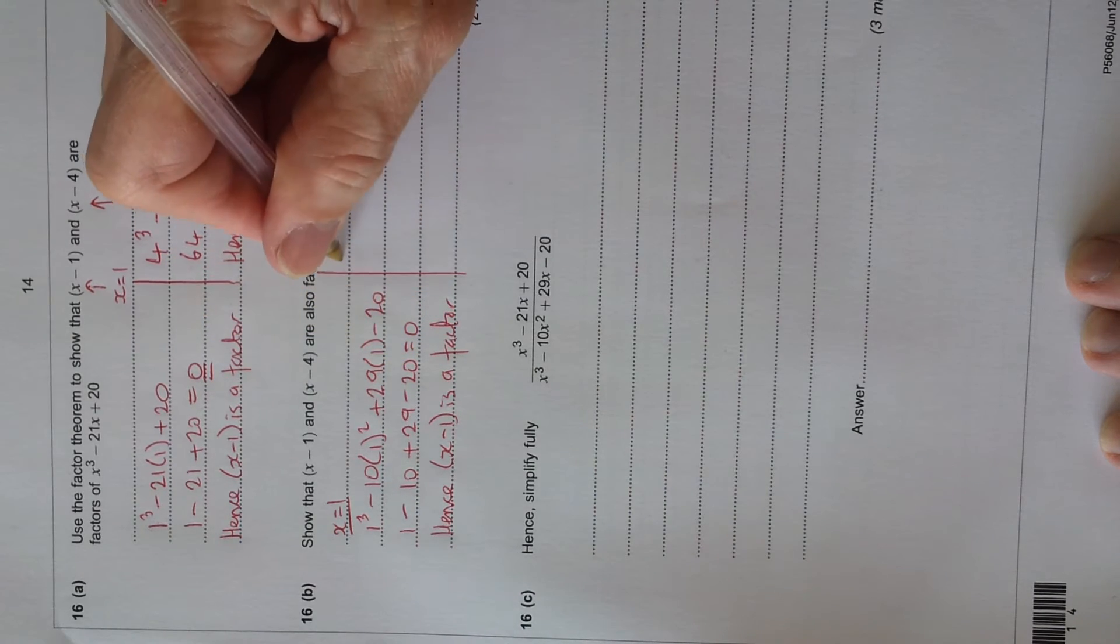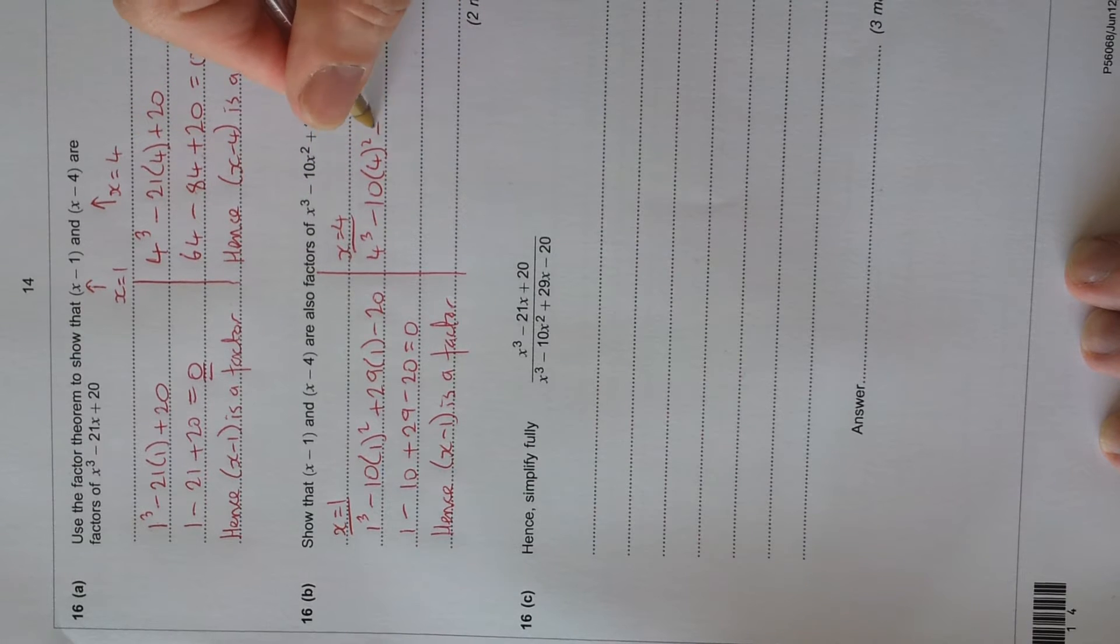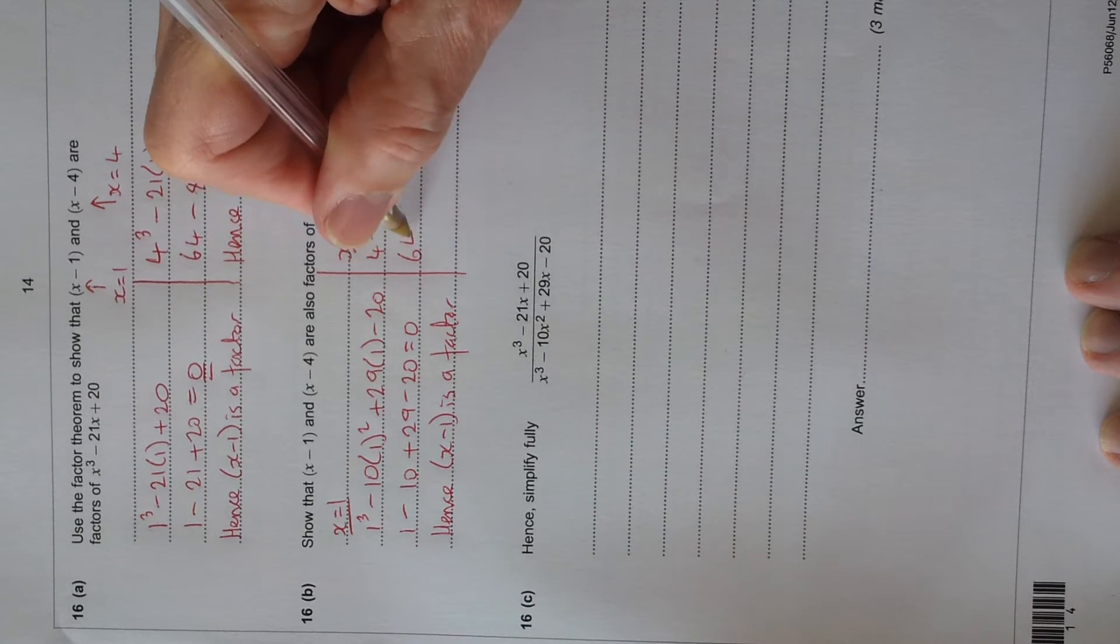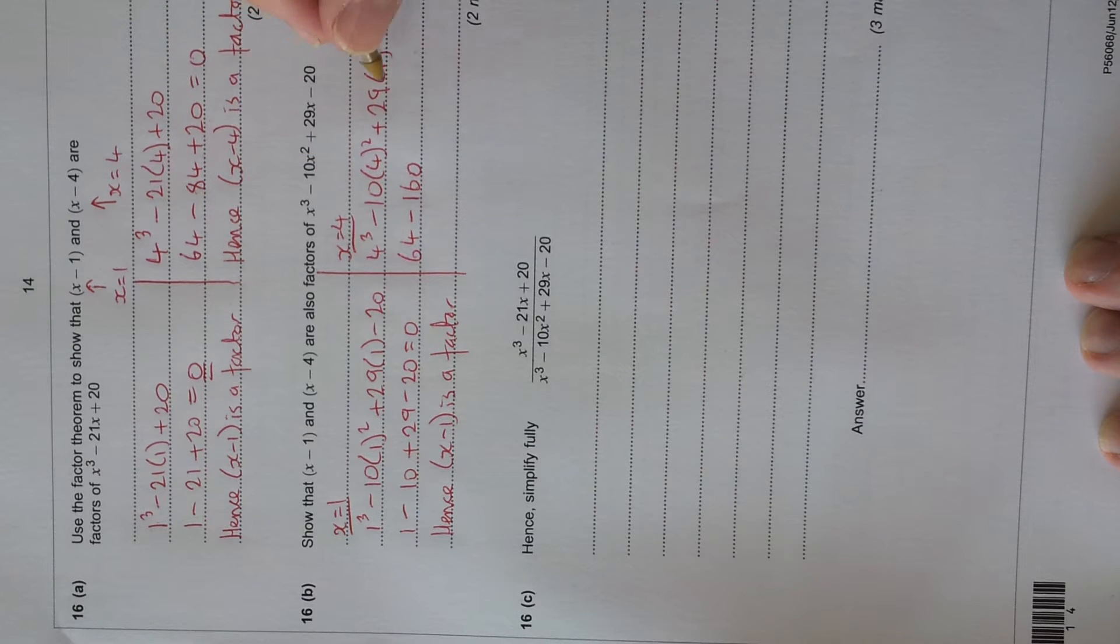Do the same with x equals 4. 4 cubed minus 10 times 4 squared plus 29 times 4 minus 20. So we've got 64 again for 4 cubed minus 4 squared is 16 times 10, 160, so minus 160. And 29 times 4, just make it 30. So 4 30s, 120, so it's 116. Plus 116 minus the 20. I've got 116, 120, 180, and then minus 160 and minus 120 is minus 180, so it equals 0. So that's correct. Hence, x minus 4 is a factor.